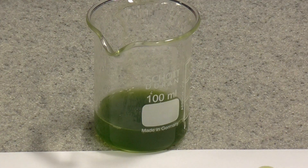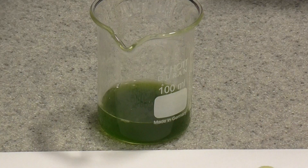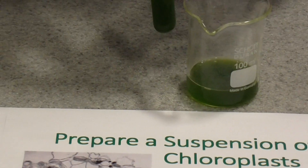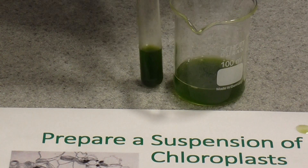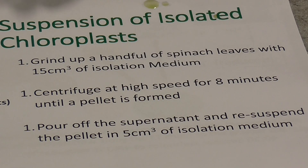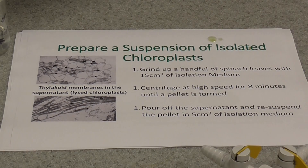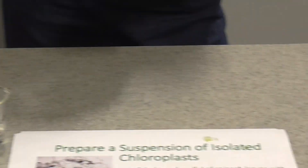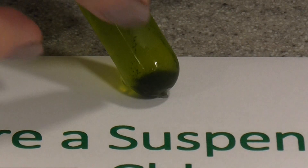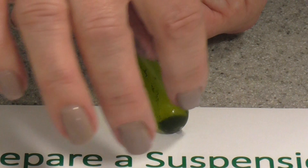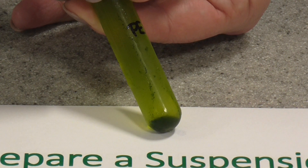Next, pour the filtered liquid into a clean centrifuge tube and place it in your bench centrifuge and spin it at high speed — I find eight minutes works with my centrifuge. You're spinning until you can see a nice clear pellet has formed containing the chloroplasts. You can see the clearer liquid at the top — that's the supernatant — and at the bottom a darker patch, which is the pellet where the chloroplasts will be.